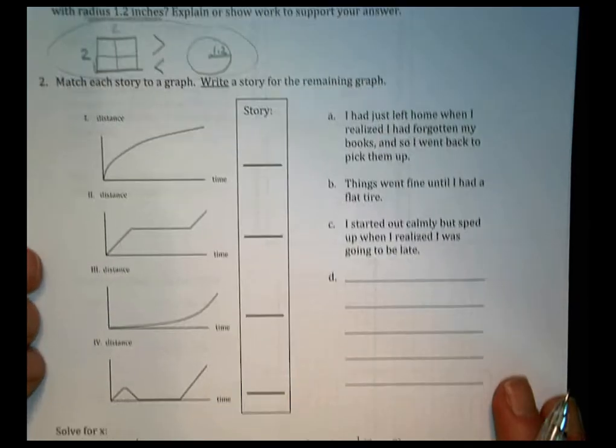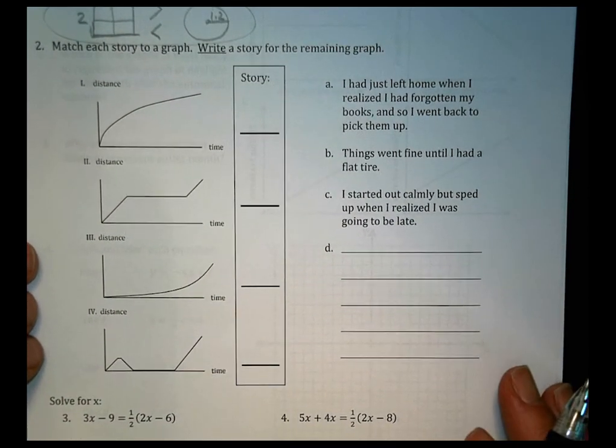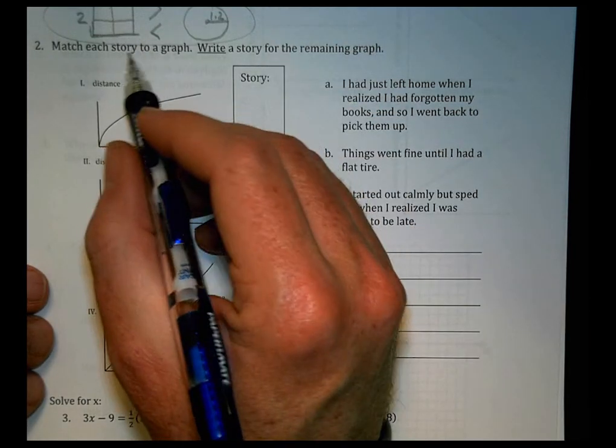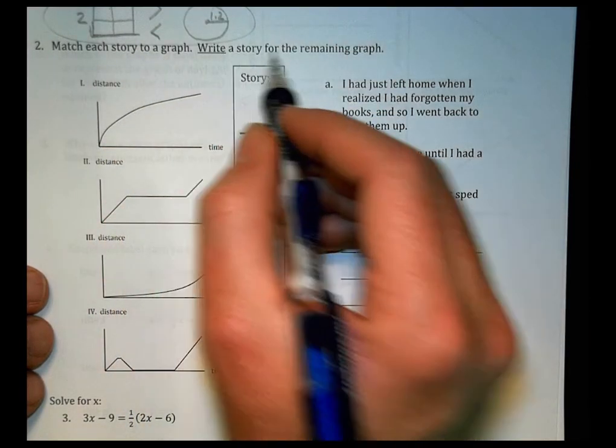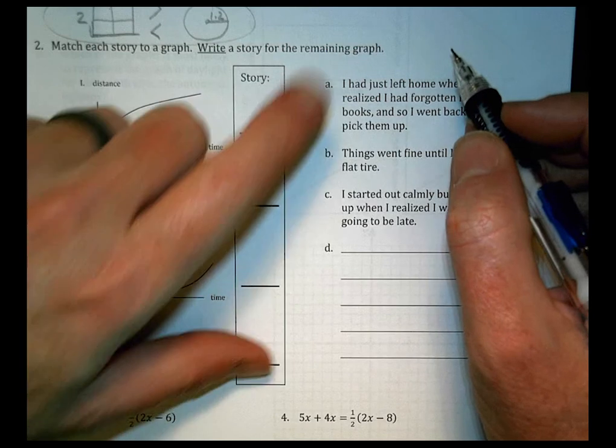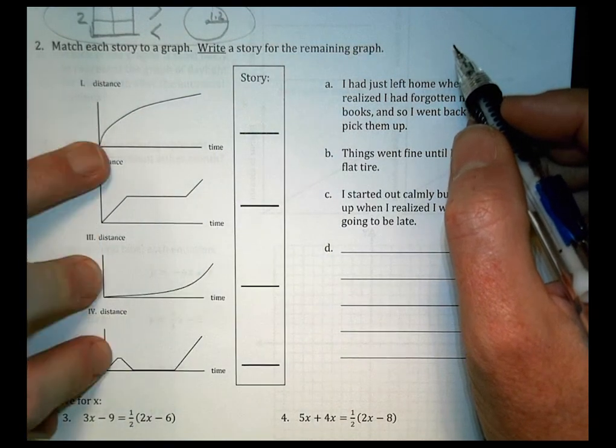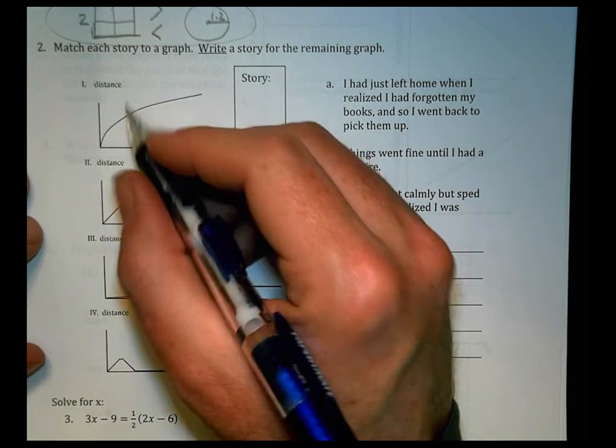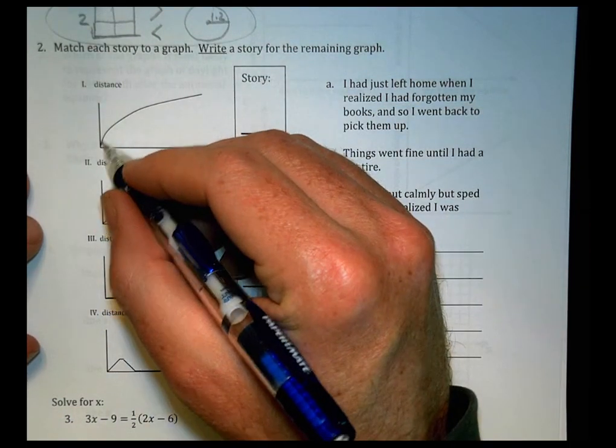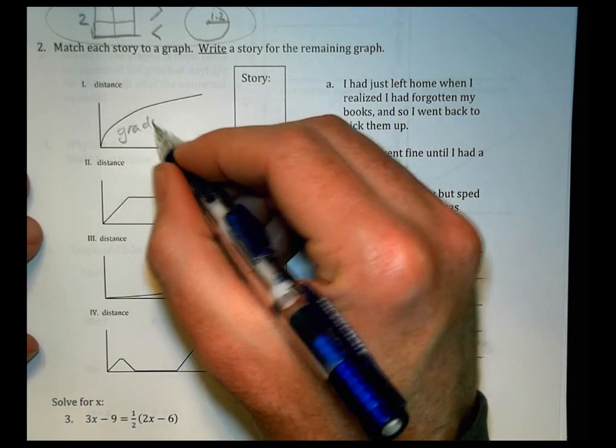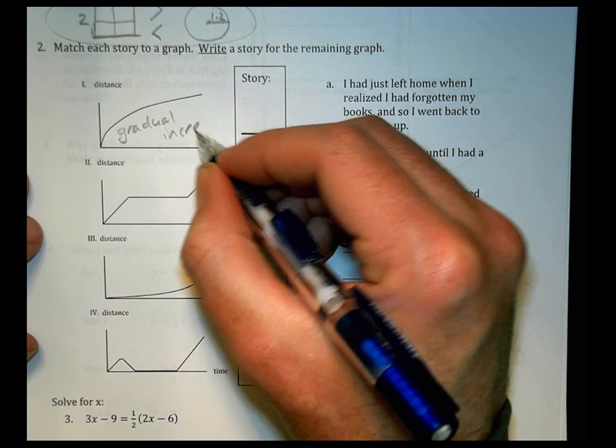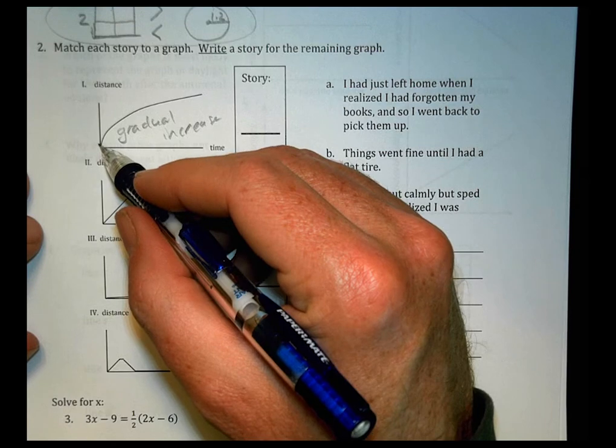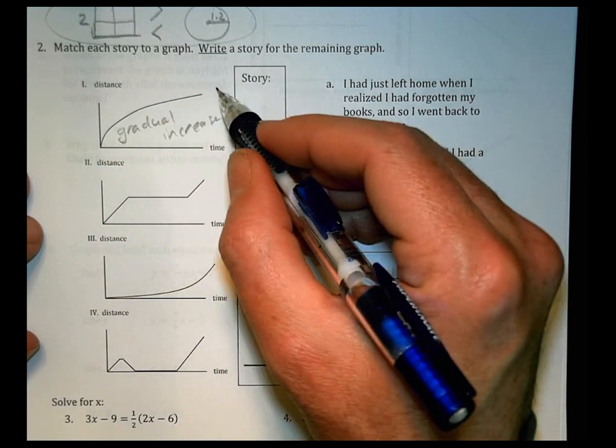All right. Number 2. I'm going to talk to number 2 for you as well. It says match each story to a graph and write a story for the remaining graph. So we have 3 stories that match 3 of these and there's 1 that doesn't have a story. In this case here, just looking at the graphs, we have something that has basically a gradual increase, right? There's a distance and there's a time and the distance is increasing gradually over time.